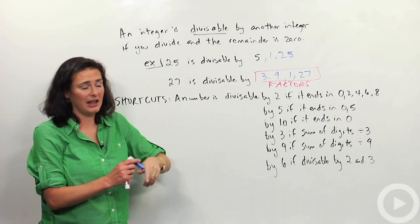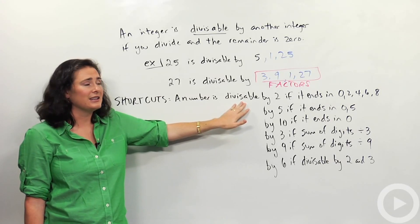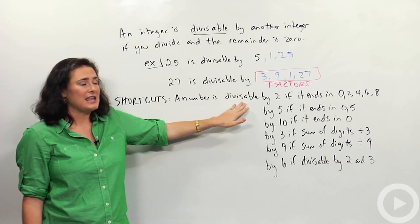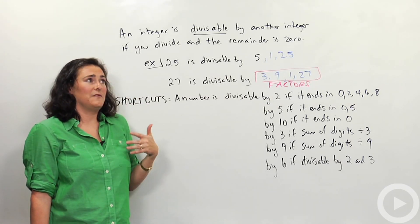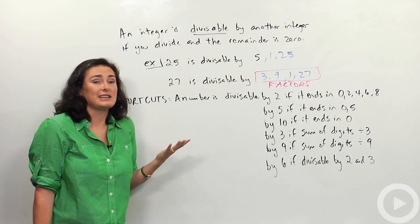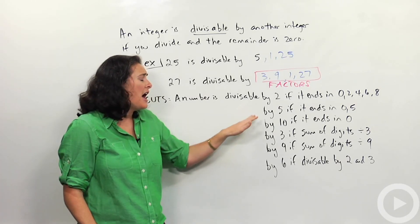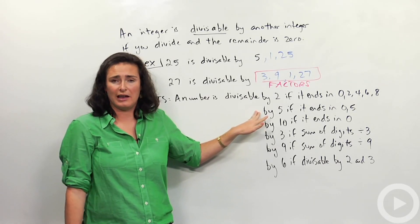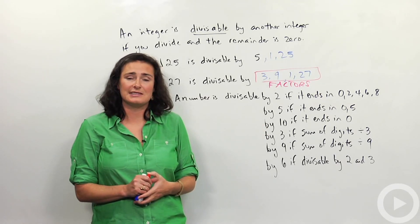Here's some rules you can memorize, and I bet you already know a lot of these. A number is divisible by 2 if it ends in 0, 2, 4, 6, or 8. For example, 108 is divisible by 2 because it ends in 8, or 153 million and 6 is divisible by 2 because it ends in 6. A number is divisible by 5 if it ends in 0 or 5. Same thing with 10 - a number is divisible by 10 if it ends in 0.